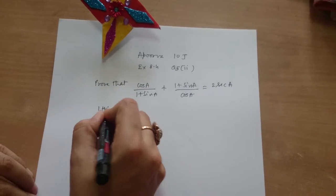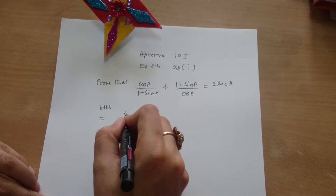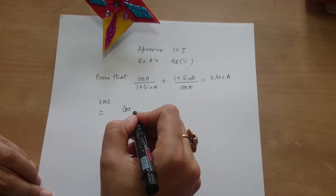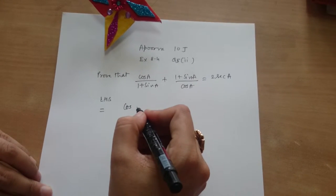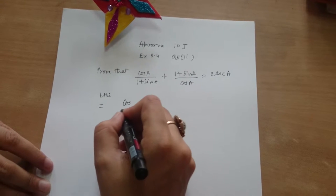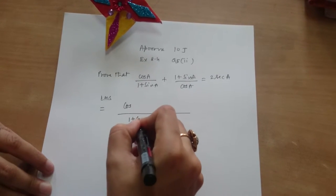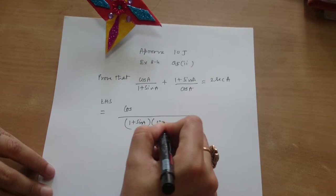First we take left hand side: cos square A plus 1 plus sin A upon... You take the LCM. 1 plus sin A into cos A.